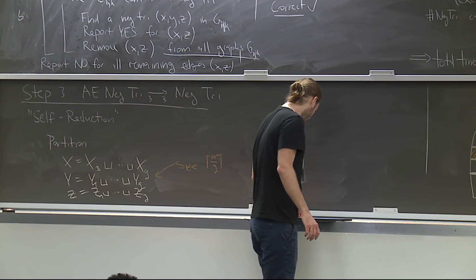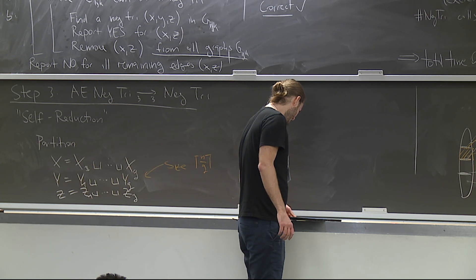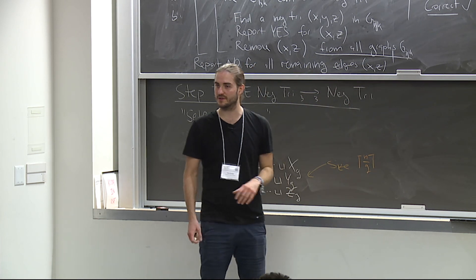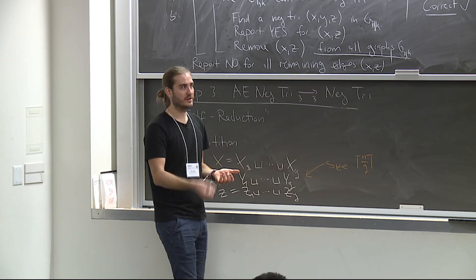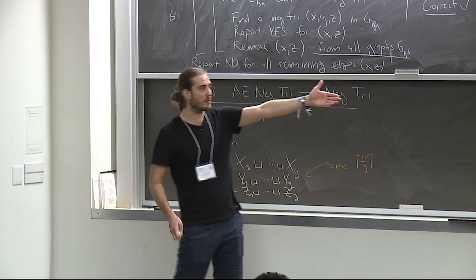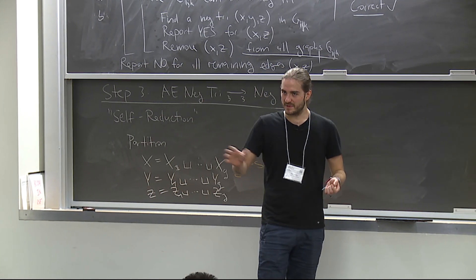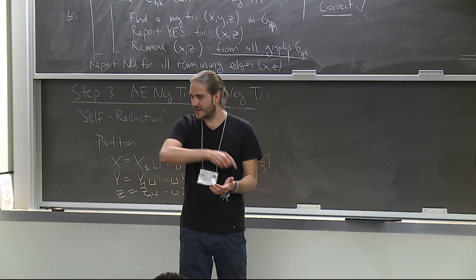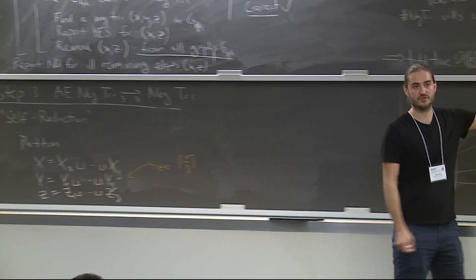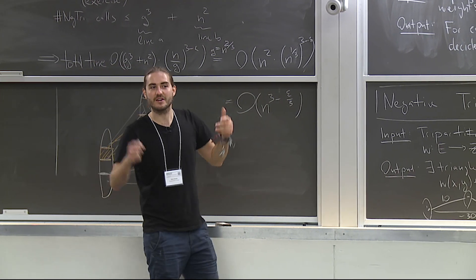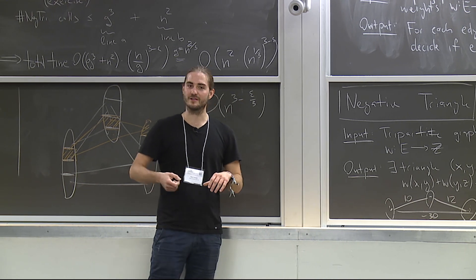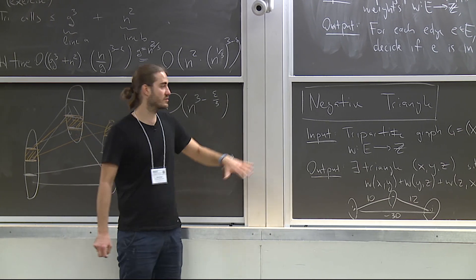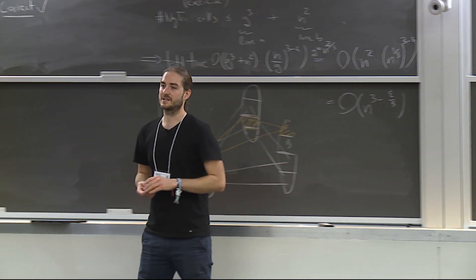That basically concludes the chain of reductions. The takeaway: we've seen a chain of reductions proving that APSP is equivalent to an easier and easier problem, until the easiest problem is negative triangle. Whenever you want to prove APSP-hardness reductions, you should not reduce from APSP — you should reduce from negative triangle, because it's the easiest hard version. You'll have the easiest time in your reductions whenever you start from negative triangle — just a hint for the exercises.